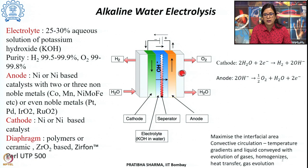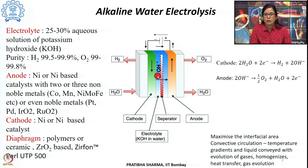At the anode side, the hydroxyl ions recombine to produce oxygen, water, and two electrons are liberated. The oxygen is evolved in the process and the two electrons pass through the external circuit, completing the electrical circuit. This is how the alkaline water electrolysis reaction takes place.